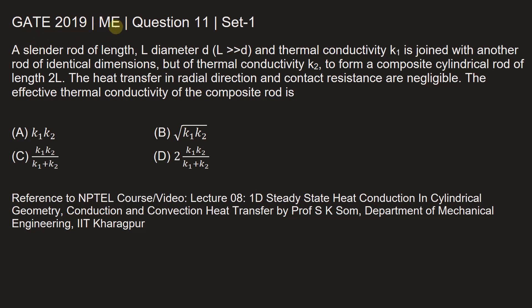This question is from GATE Mechanical Engineering 2019, question number 11 of set one. The question is: a slender rod of length L, diameter D where L is much greater than D, and thermal conductivity K1 is joined with another rod of identical dimensions but thermal conductivity K2 to form a composite cylindrical rod of length 2L. The heat transfer in radial direction and contact resistance are negligible.